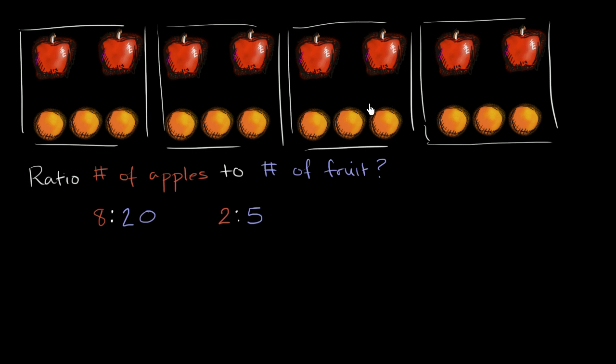We see that in each group, for every two apples, we have one, two, three, four, five pieces of fruit. For every two apples, we have five pieces of fruit.